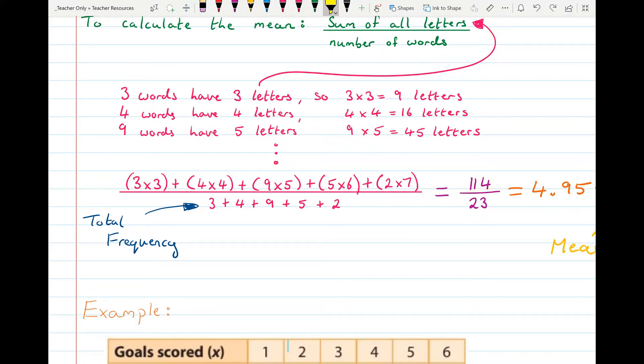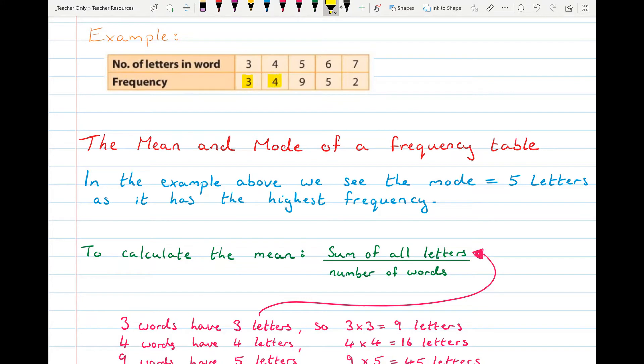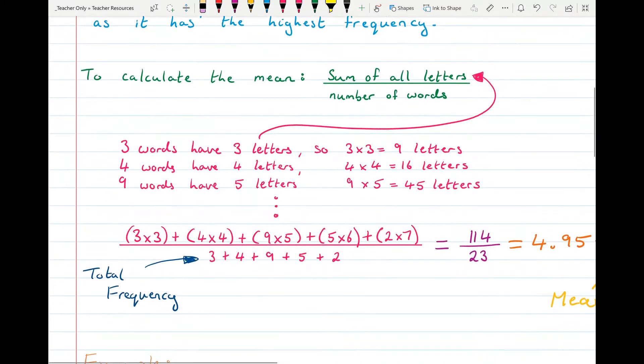And then we need to count up how many words were there all together. Well looking in our frequency table again there were three words, four words, nine, five and two. So add all your frequencies together that gives you the total amount of words and there were 23 words.